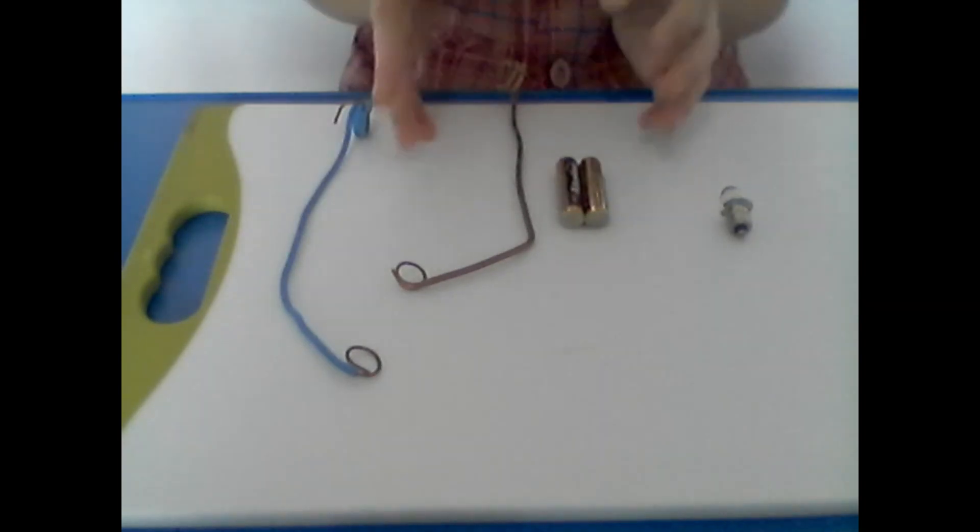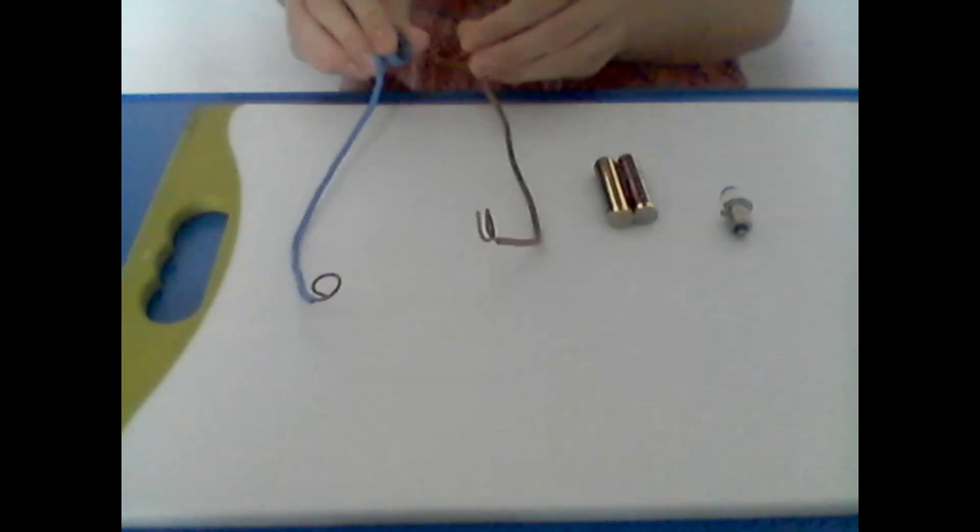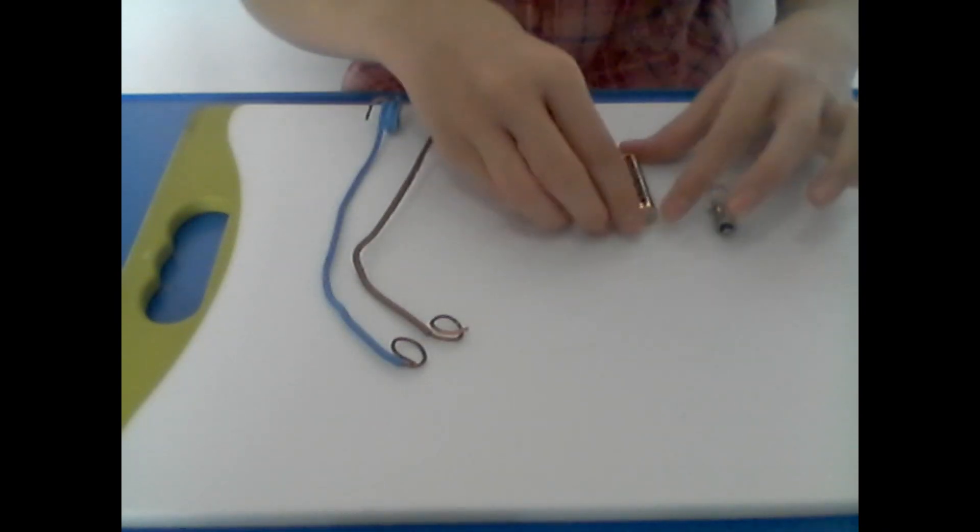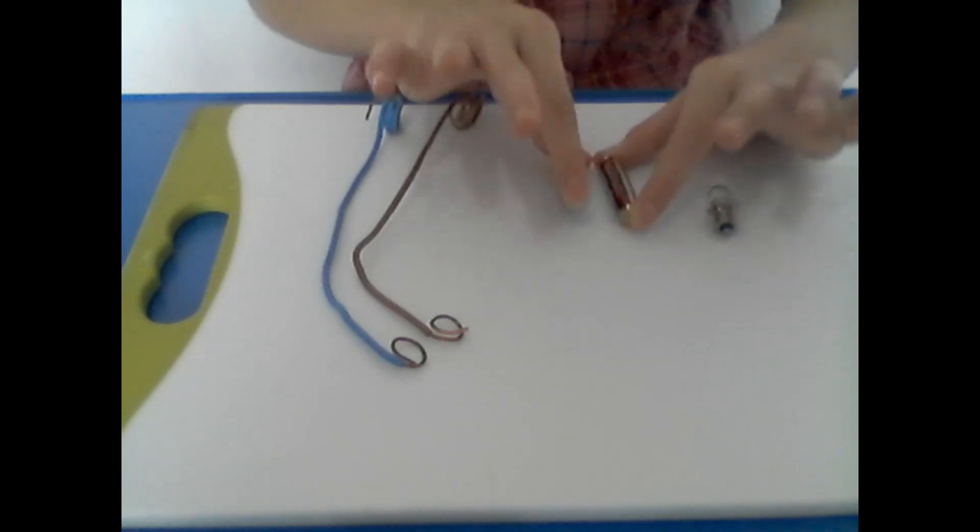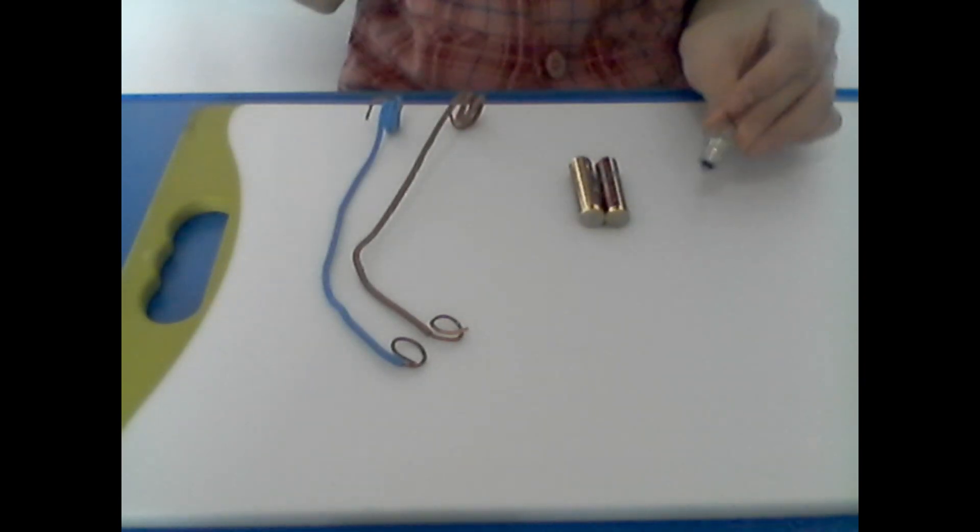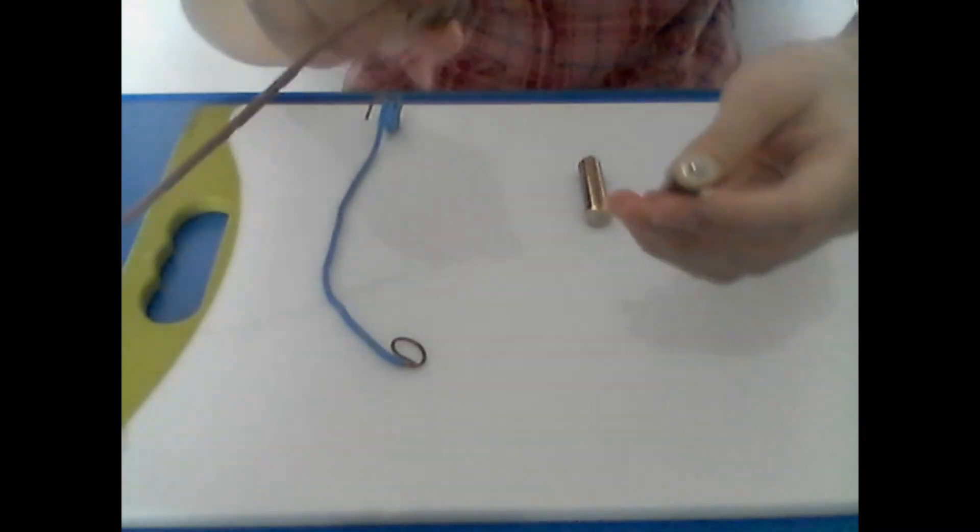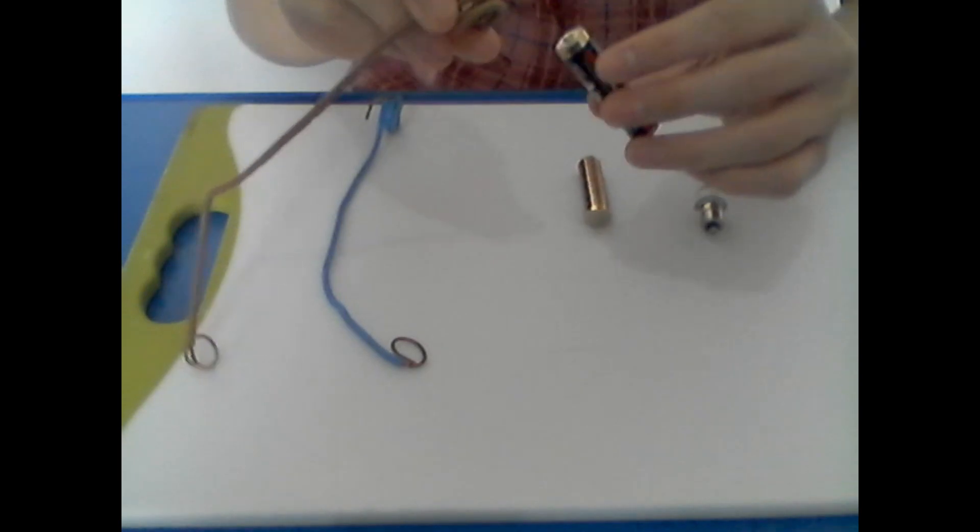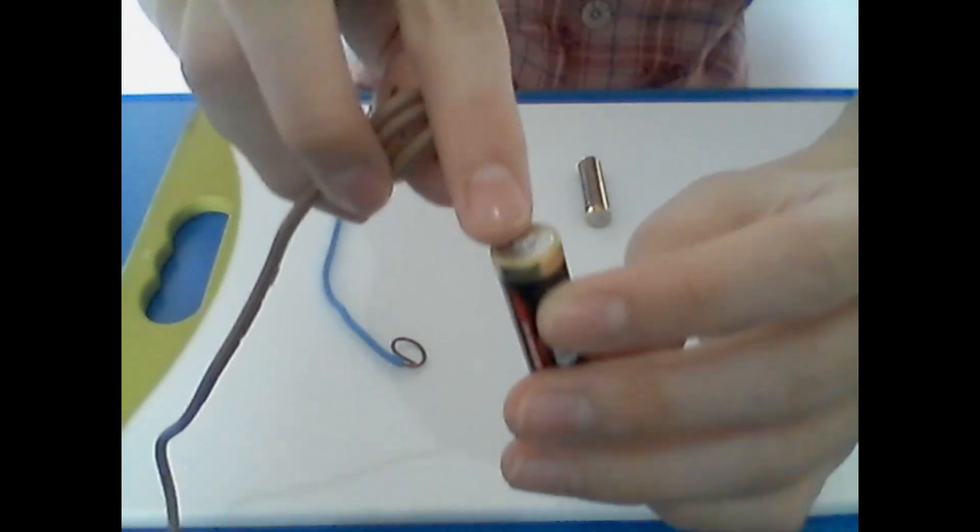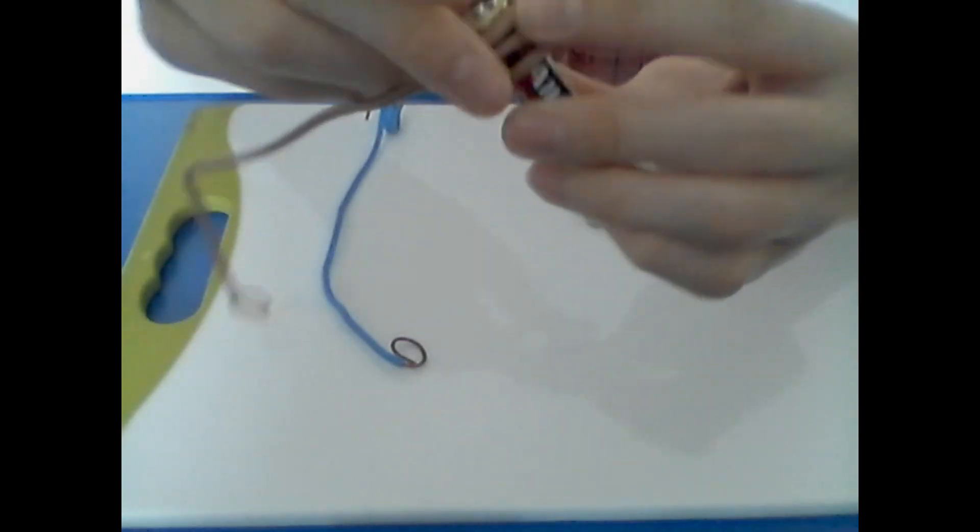Now, all we need is some batteries, two wires, and a light bulb. The battery needs to match how many volts the light bulb needs. We connect the wire to the bumpy part on the battery over here, so it touches each other like this.